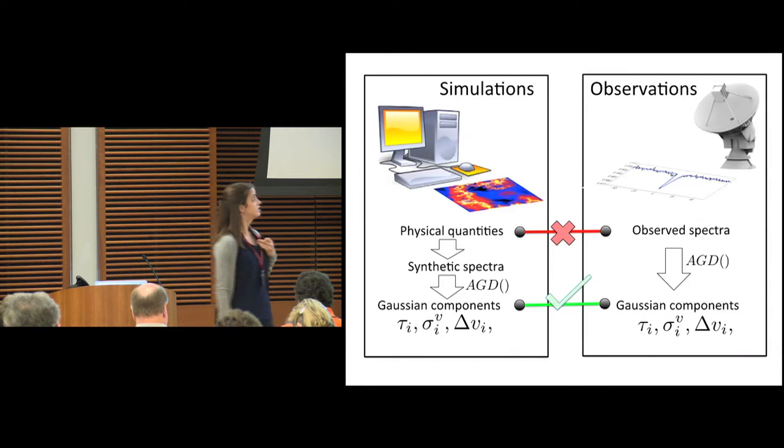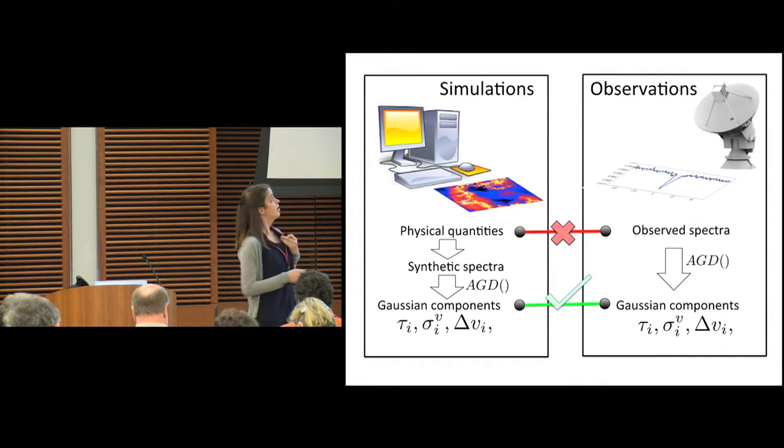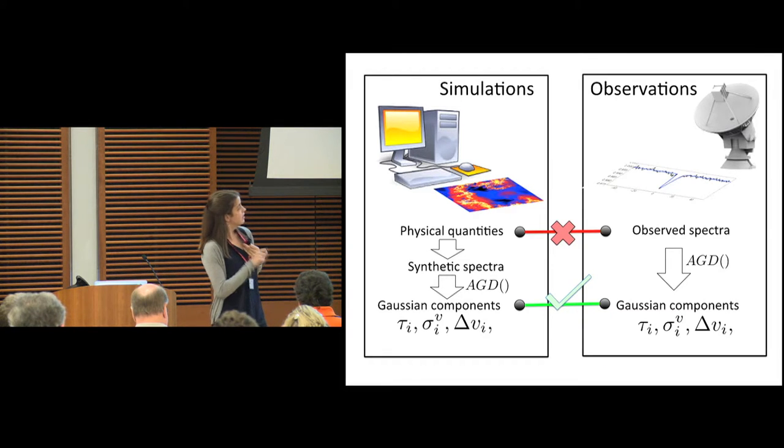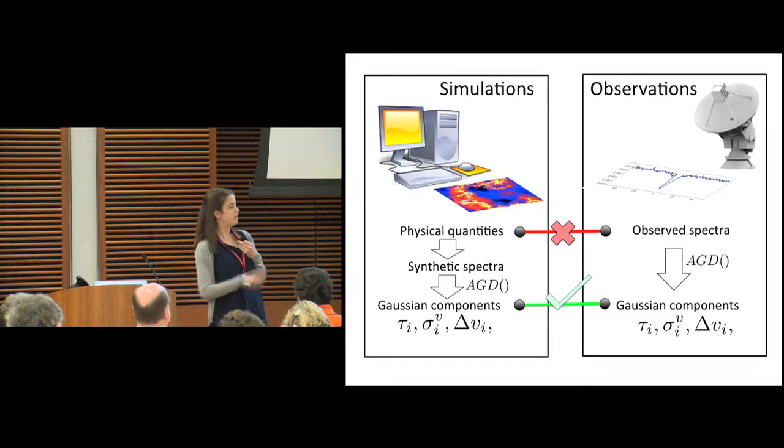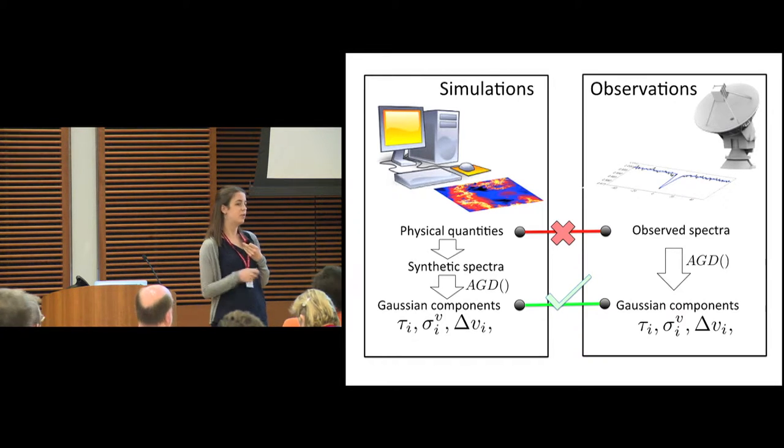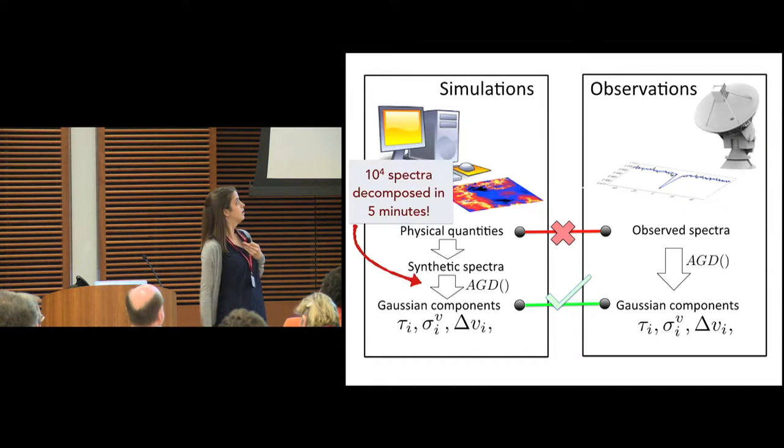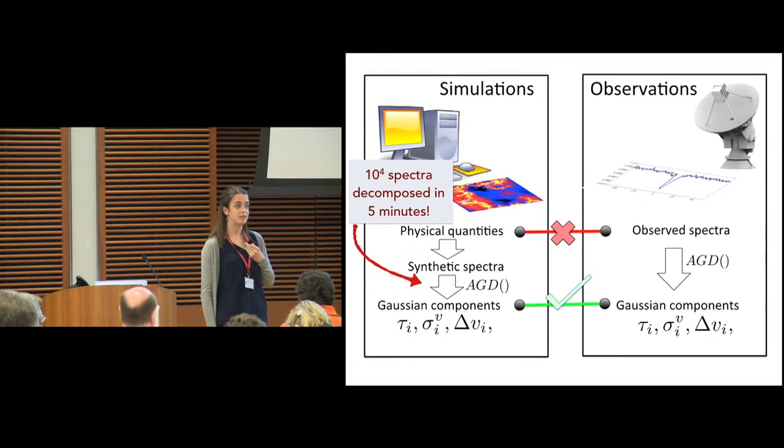Given AGD, we can actually compare our observations and simulations in a one-to-one way. As we all know, it's difficult to go directly from physical quantities to observed spectra. So by applying AGD to our observations and then applying AGD identically to these synthetic spectra, we can compare the basic parameters from the fits in a one-to-one way. And I'd like to note that this is a very fast algorithm. We were able to decompose all 10,000 spectra in about five minutes on my laptop.